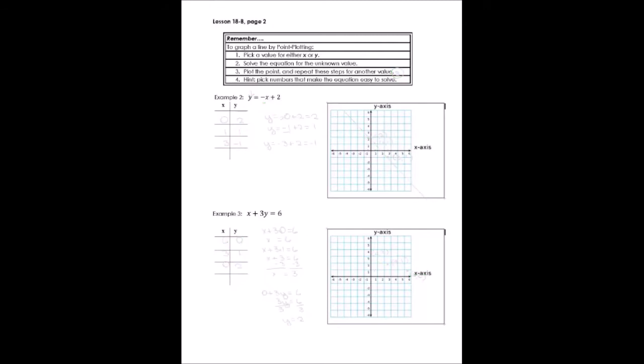So you get to do a couple of lines by point plotting on this page. What I really want you to do is follow the steps that we've done at the top of the page. First you're going to pick a value for the equation. You're going to plug in either a value for x or a value for y. Then you're going to solve the equation for the one that you didn't plug the number in for. You'll plot the point, you'll repeat the steps. Probably it's a good idea to plot three points so you can check yourself. And there's a hint for you: pick numbers that make the equation easy to solve.